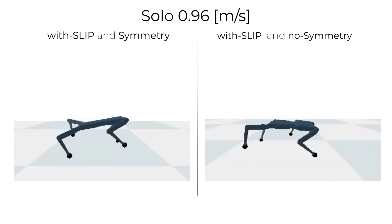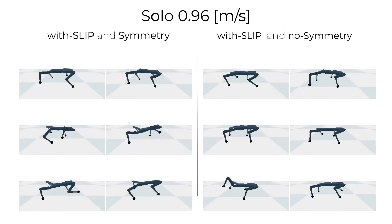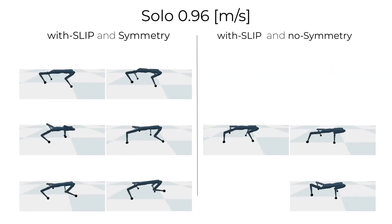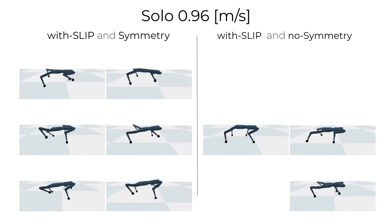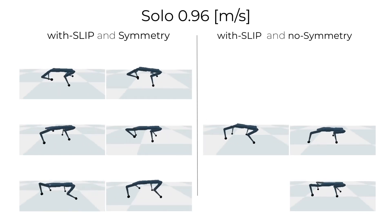Therefore, we theorize that by extending this approach to model-based control and more complex robot morphologies, we will be able to generate realistic physics-based locomotion for a large range of robots and animatic characters, with a highly flexible learning framework.